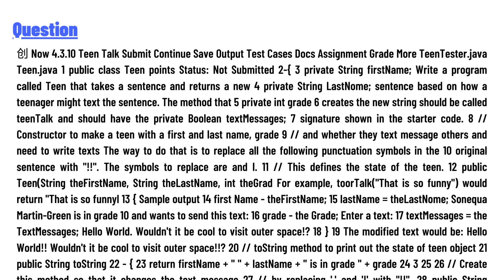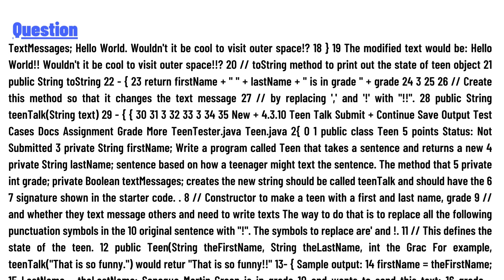The signature is shown in the starter code. The constructor is used to make a Teen with a first and last name, grade, and whether they text message others. To text the way a teen does, you need to replace the following punctuation symbols in the original sentence with the defined symbols. This defines the state of the Teen object with fields: public Teen, string firstName, string lastName.